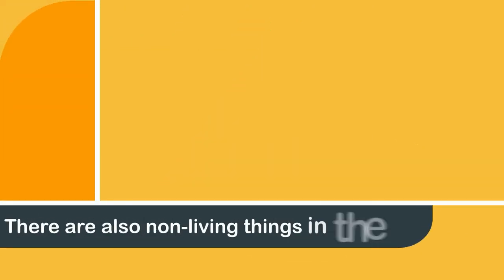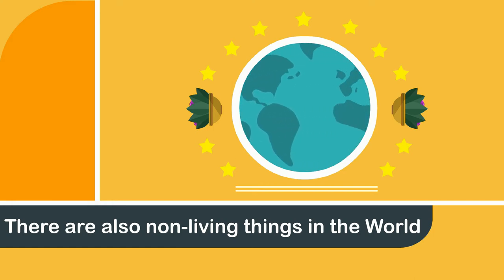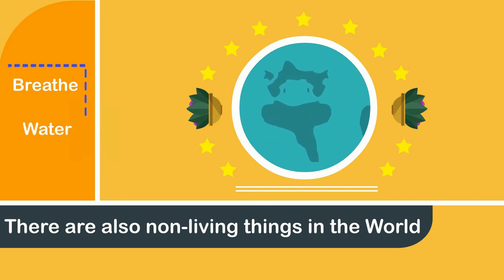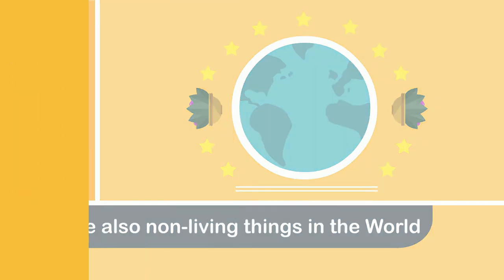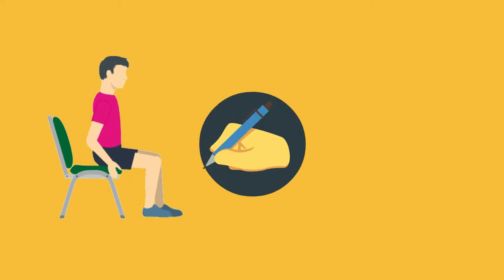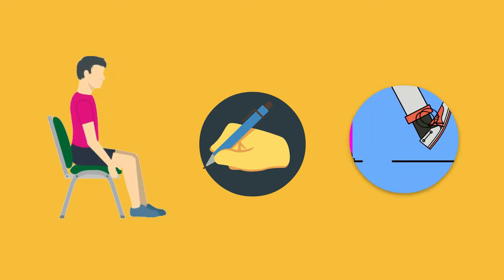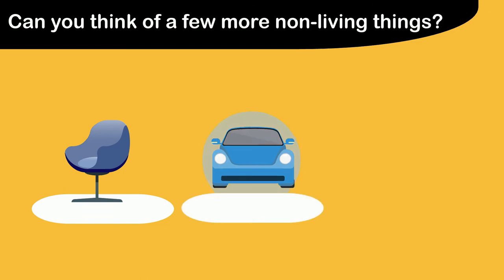There are also non-living things in the world. They are those objects which do not breathe, and do not need water or food. For example, the chair you are sitting on, the pencil you write with, and the shoes you are wearing — these are all non-living things. Can you think of a few more non-living things?